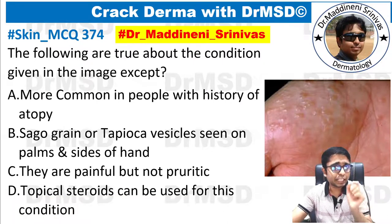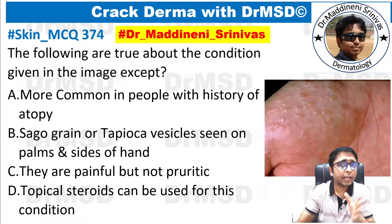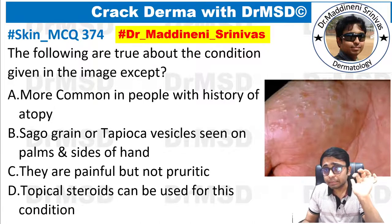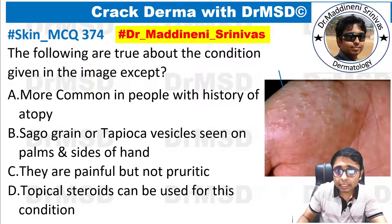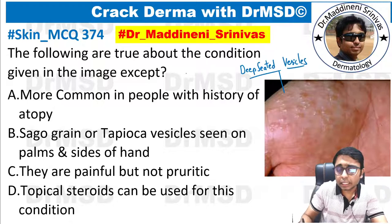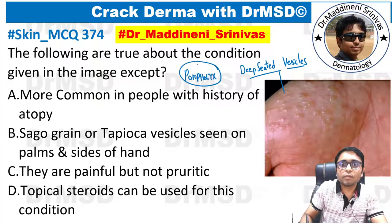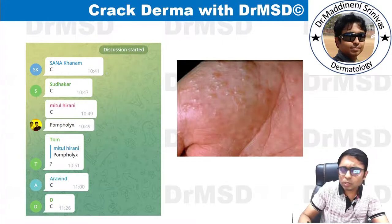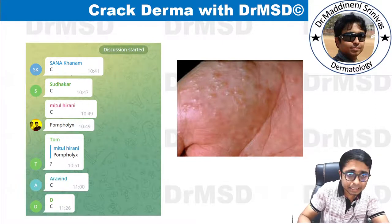Coming to the question: 'The following are true about the condition given in the image, except.' You need to identify the wrong statement regarding this condition in which you can see deep-seated vesicles present over the palms. Whenever you see this kind of picture, the diagnosis you should think about is pompholyx. I'm very happy that almost all the students on Telegram marked the correct answer, which is option C.